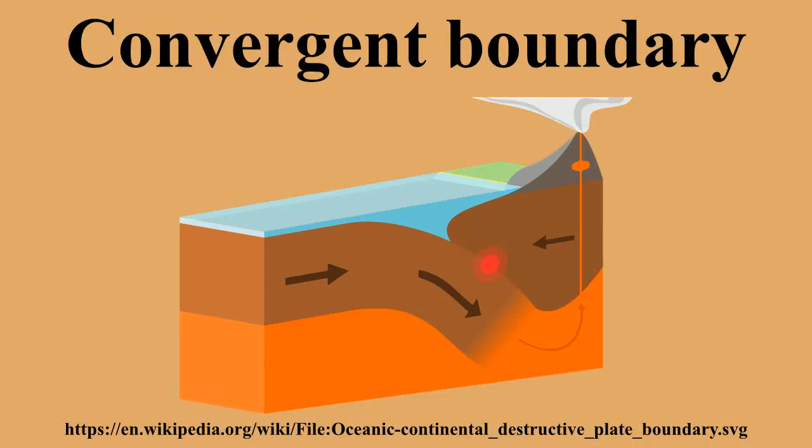A subduction zone is formed at a convergent plate boundary when one or both of the tectonic plates is composed of oceanic crust. The denser plate, made of oceanic crust, is subducted underneath the less dense plate, which can be either continental or oceanic crust. When both of the plates are made of oceanic crust, convergence is associated with island arcs such as the Solomon Islands.